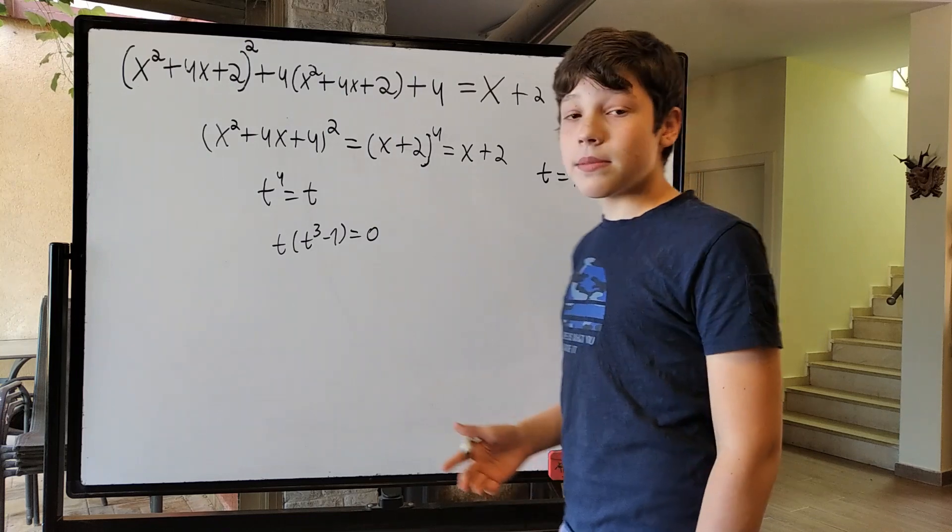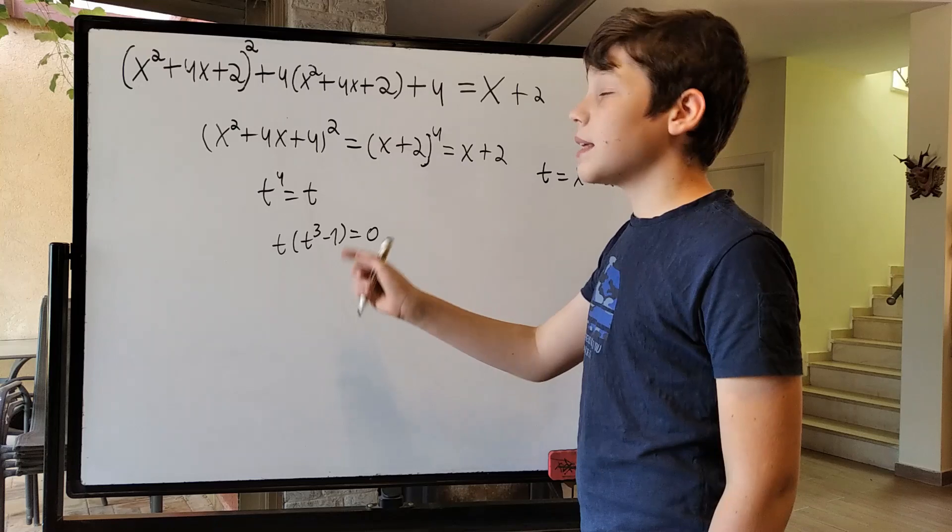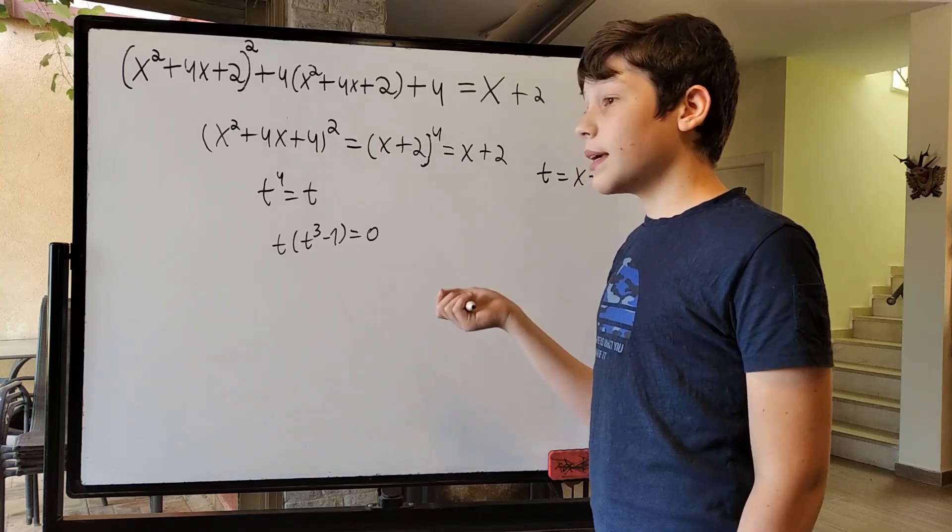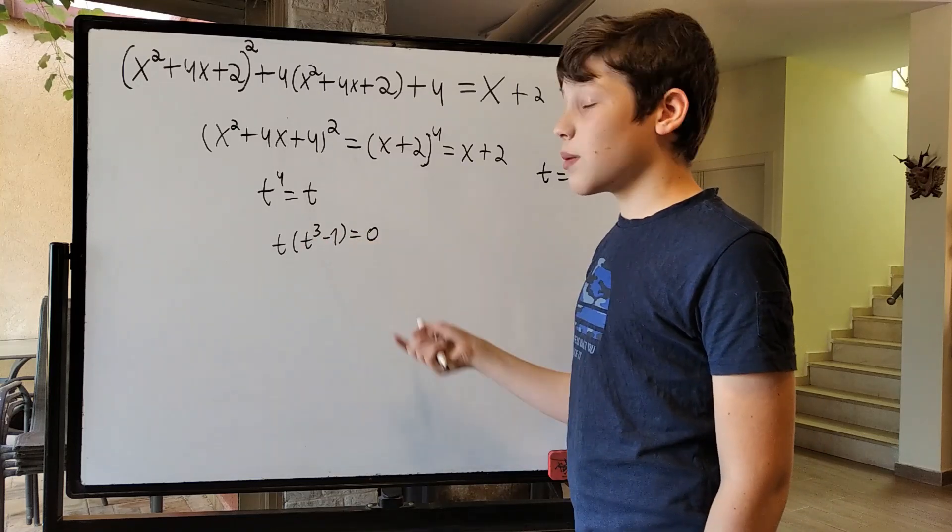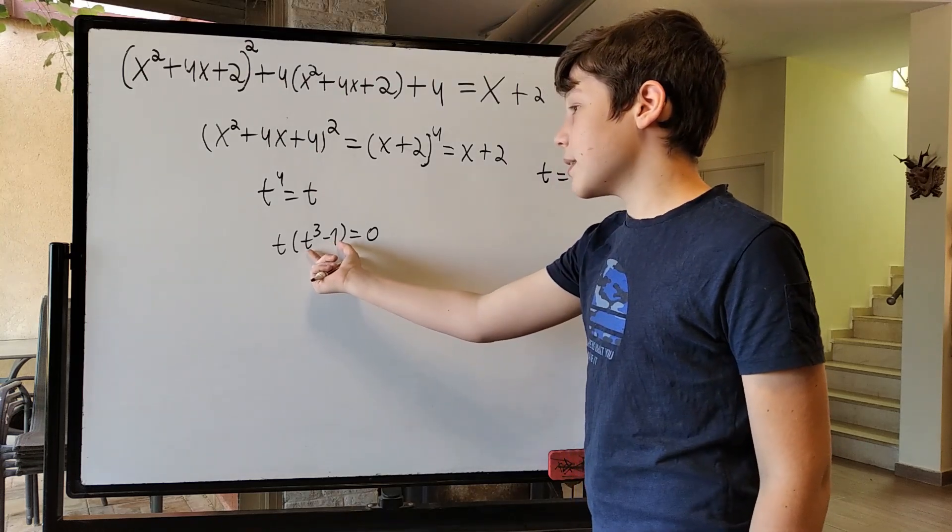Again, it seems as if we can just say t is 0 or t cubed is 1, meaning t is 0 or 1. But again, this equation also has complex solutions. And we're going to do that by expanding this.